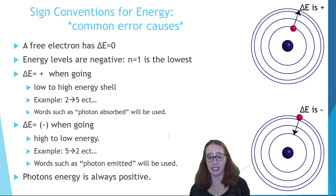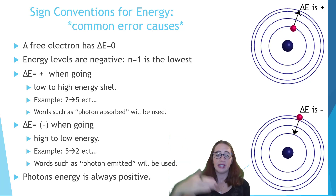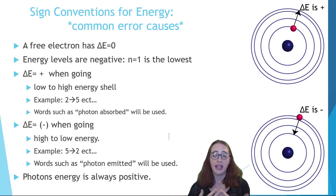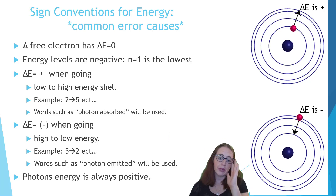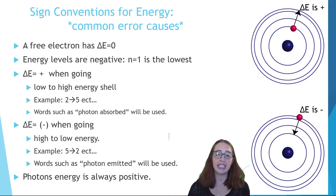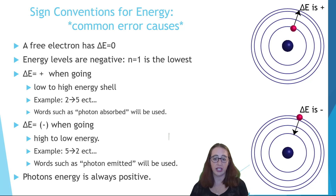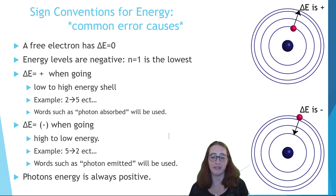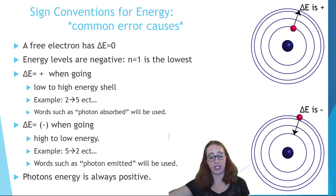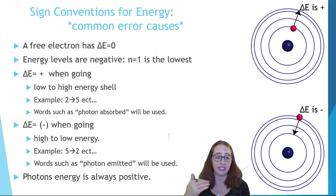When an electron loses energy, going from a high energy level down to a low one—such as n=4 down to n=1—its change in energy delta E is negative. Often the question tells you whether the electron is going up or down through language rather than numbers. If a photon is absorbed, the electron is absorbing energy and going up in energy, giving a positive delta E. If a photon is emitted, the electron is losing energy, meaning delta E is negative.